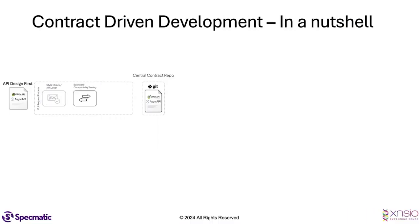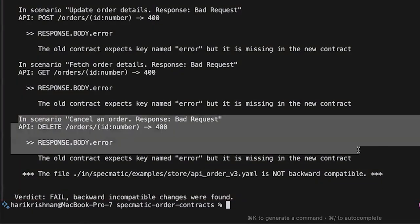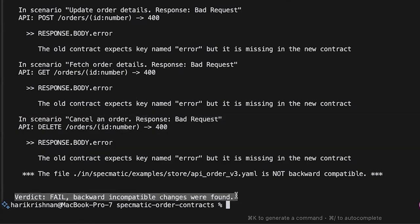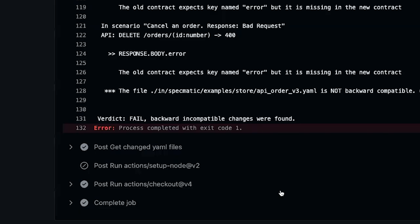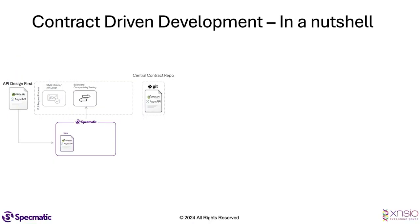Once the linter passes, we would check for backward compatibility. Backward compatibility is very important in most organizations — they often find out that a change broke one of the consumers only when they get to an integration environment, very late in the cycle. We want to shift that left and catch it as early as possible. We take the updated specification and run it as a stub using Specmatic, then run the old specification as a test against that stub. It's a no-code solution that verifies all tests from the old specification pass against the stub of the new specification, confirming the new specification is backward compatible.